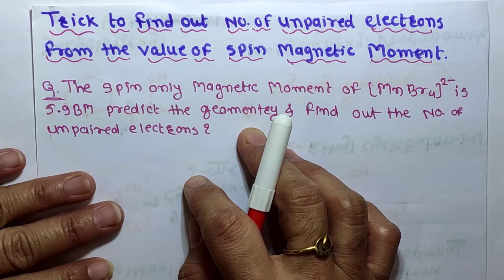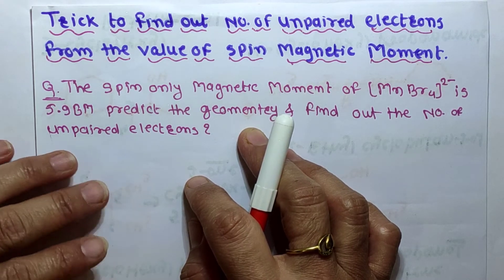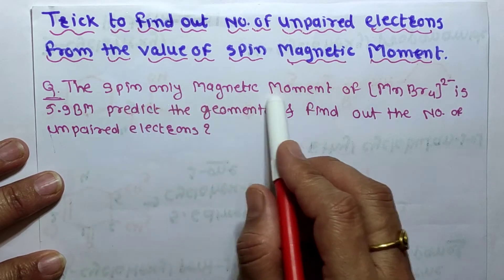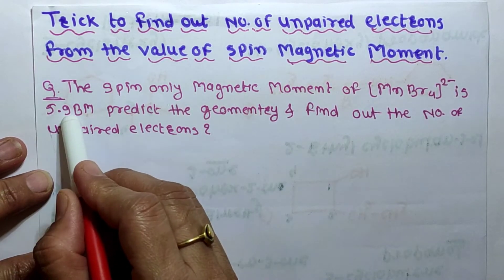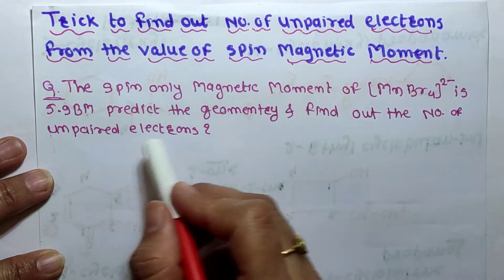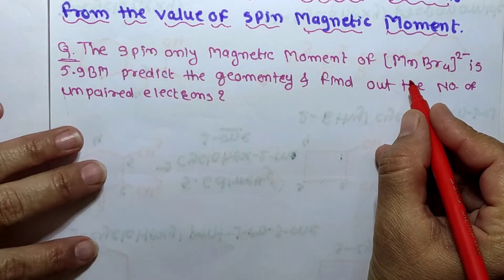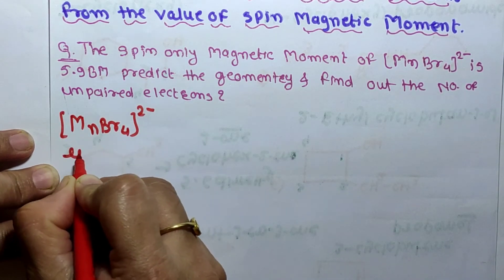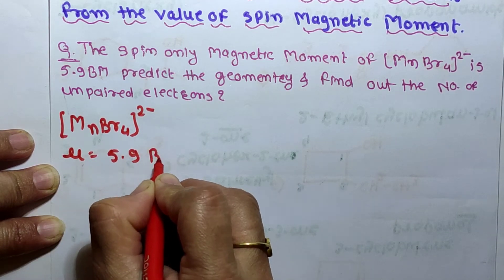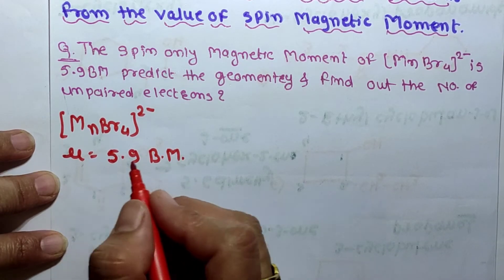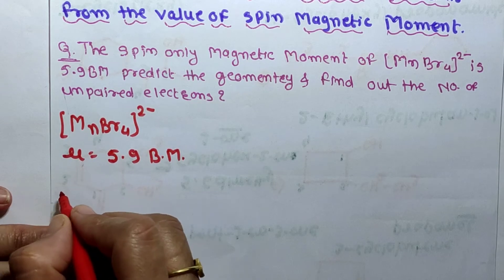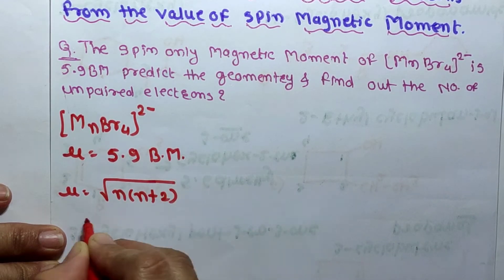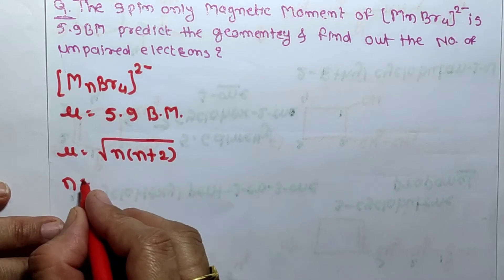Hello students. In today's video I will give a simple trick to find out the number of unpaired electrons from spin magnetic moment. The question is: the spin only magnetic moment of [MnBr₄]²⁻ is 5.9 Bohr magneton — predict the geometry and find out the number of unpaired electrons. For number of unpaired electrons, we use the formula: μ = √n(n+2), where n is the number of unpaired electrons.